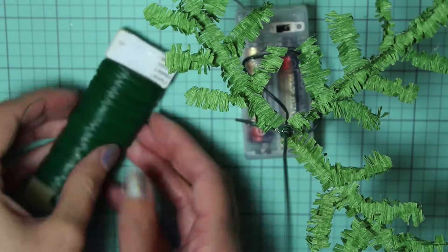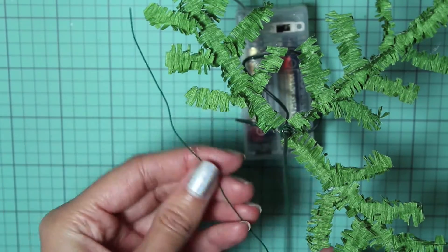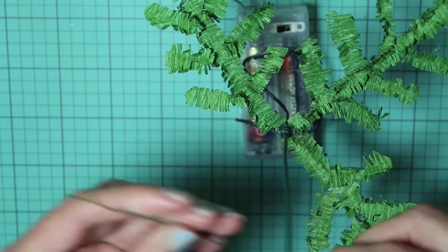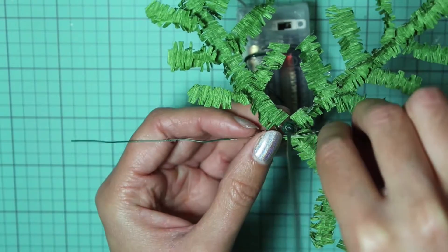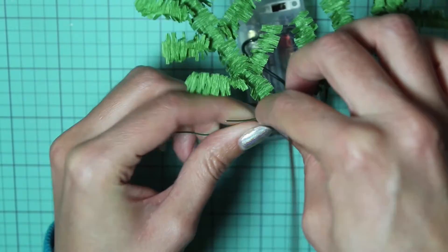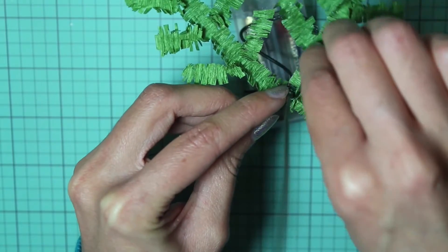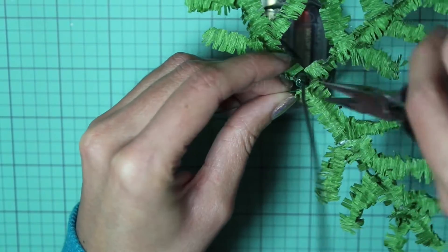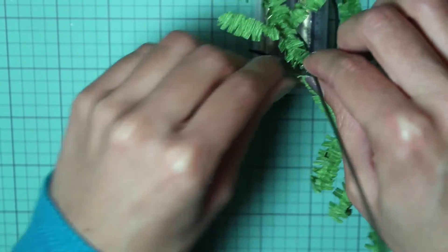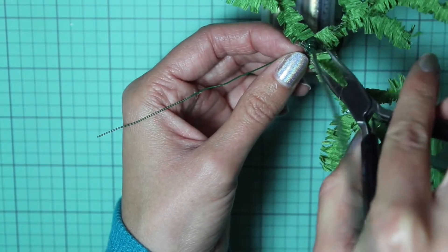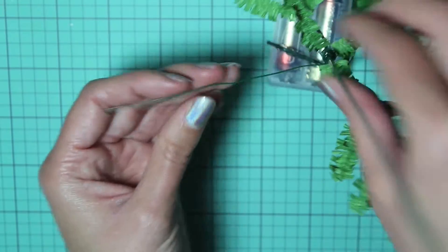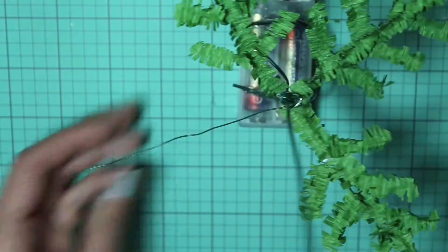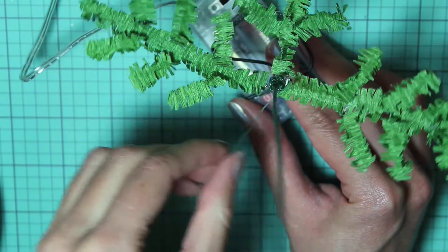Next I'm going to show you how I created the branches for the tree. I have some 24 gauge floral wire that's green. Just unroll a length of it and cut it, and then just take it and tightly wrap one end of it around the 16 gauge wire. It's up to you how long you want to make the branches. Once it's wrapped around, you can take some pliers and press tightly around it to hold it in place better. Then make sure that wire is sticking out straight, and you can take some hot glue and also put it around where it attaches.